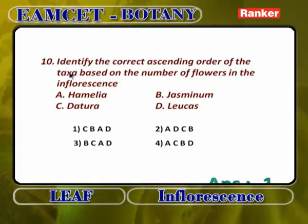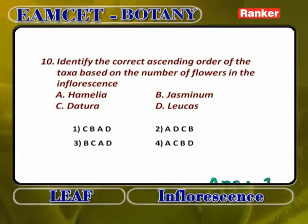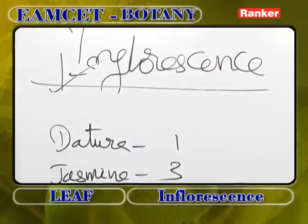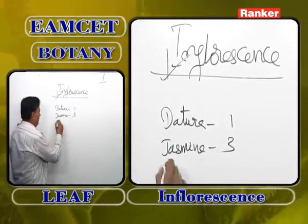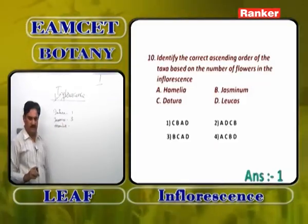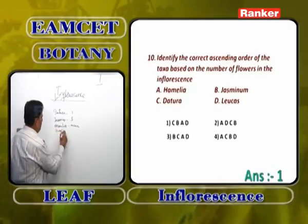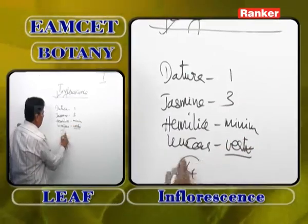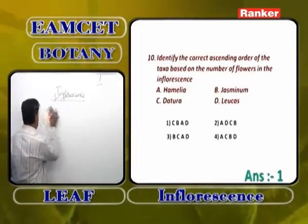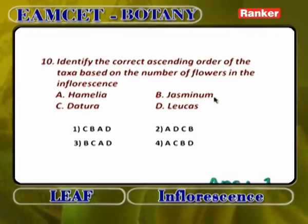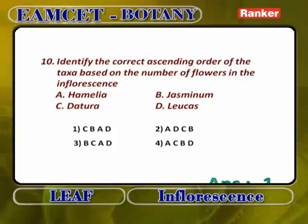Identify the correct ascending order of taxa based on number of flowers in the inflorescence. Answer: C, B, A, D. Datura (C) — terminal solitary cyme — 1 flower. Jasminum (B) — simple cyme — 3 flowers. Heliotrope (A) — monochasial helicoid cyme — more than 3 but fewer than 14. Leucas (D) — verticillaster — 14 flowers per node (7 each side). So ascending: Datura (1), Jasminum (3), Heliotrope, Leucas (14). Answer: 1.